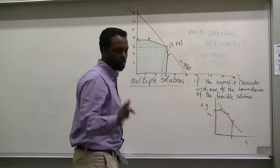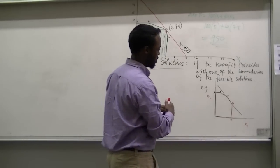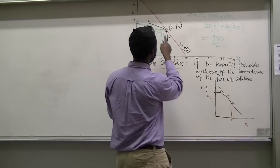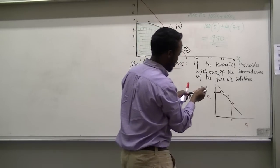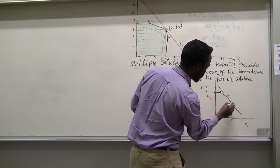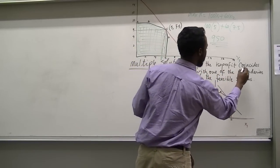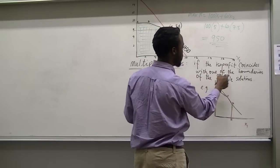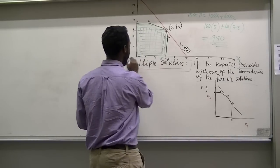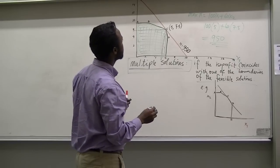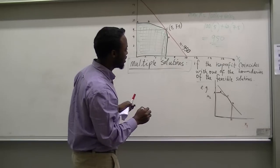In other cases there could be multiple solutions. Here, the ISO profit line touches the feasible region at only one point, but if it were touching at two points simultaneously — coinciding with one of the boundaries of the feasible solution — then we would have multiple optimal solutions.